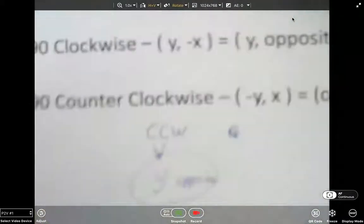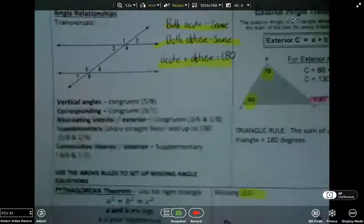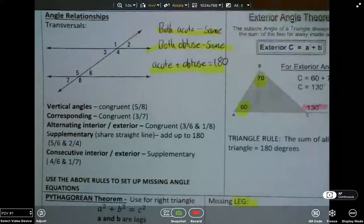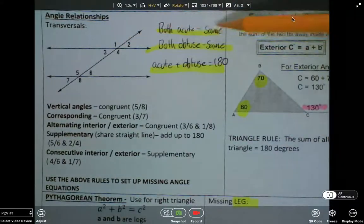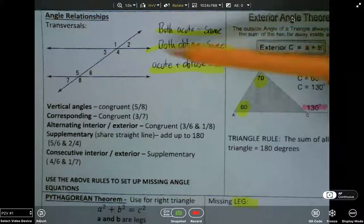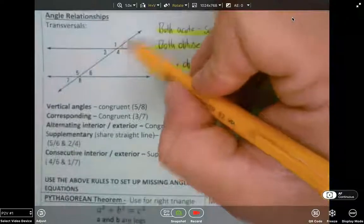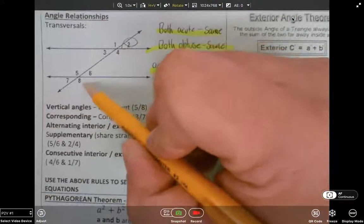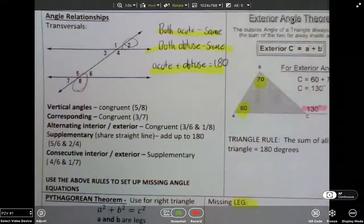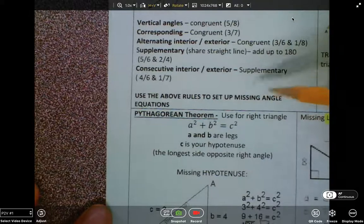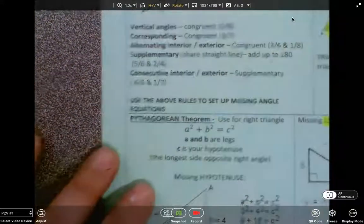The next thing we learned in 8th grade math or close to it was angle relationships. Basically, if you see transversal lines, they're both acute, then they're going to be the same. If both angles are obtuse, they're going to be the same. But if one's acute, like this one, and one's obtuse, like this one, then they'll add up to 180.